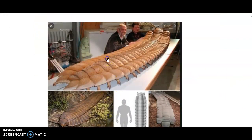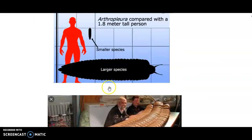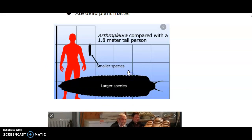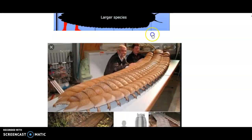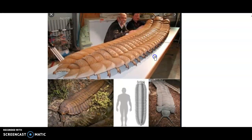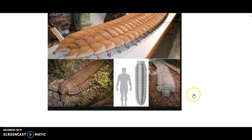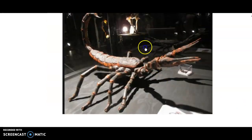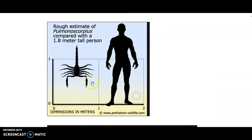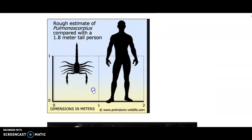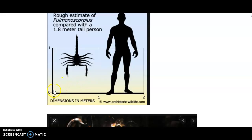Arthropleura was one of the largest terrestrial arthropods, almost nine feet in length — it was probably a herbivore and very terrifying. Pulmonoscorpius was also a very giant scorpion, almost two feet in length.